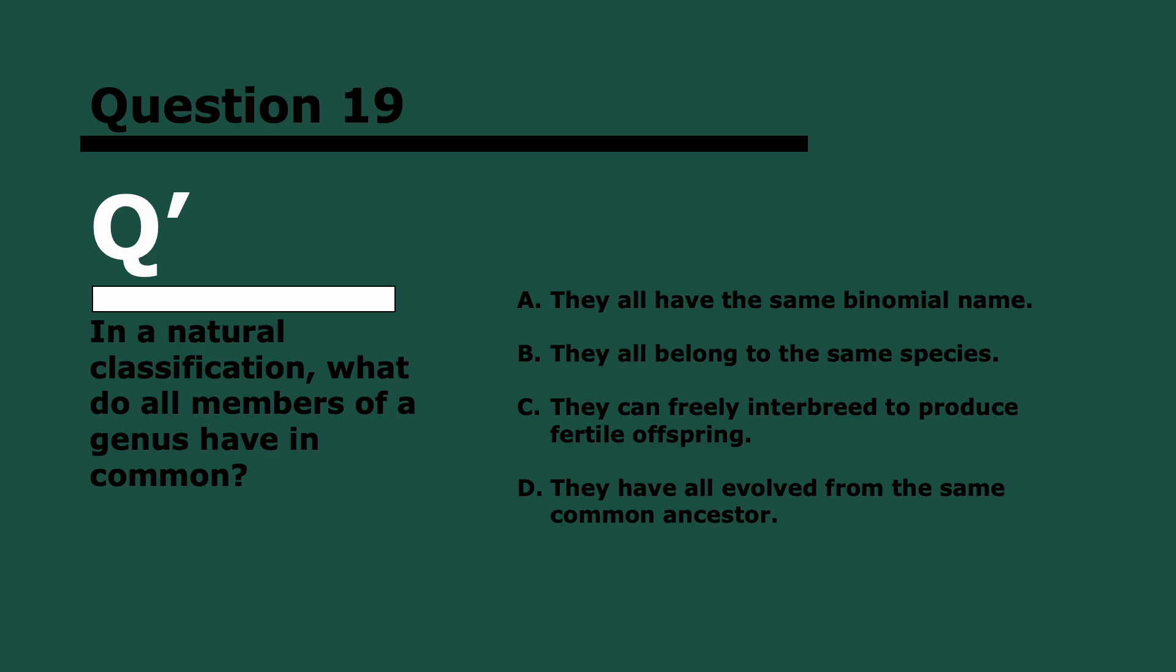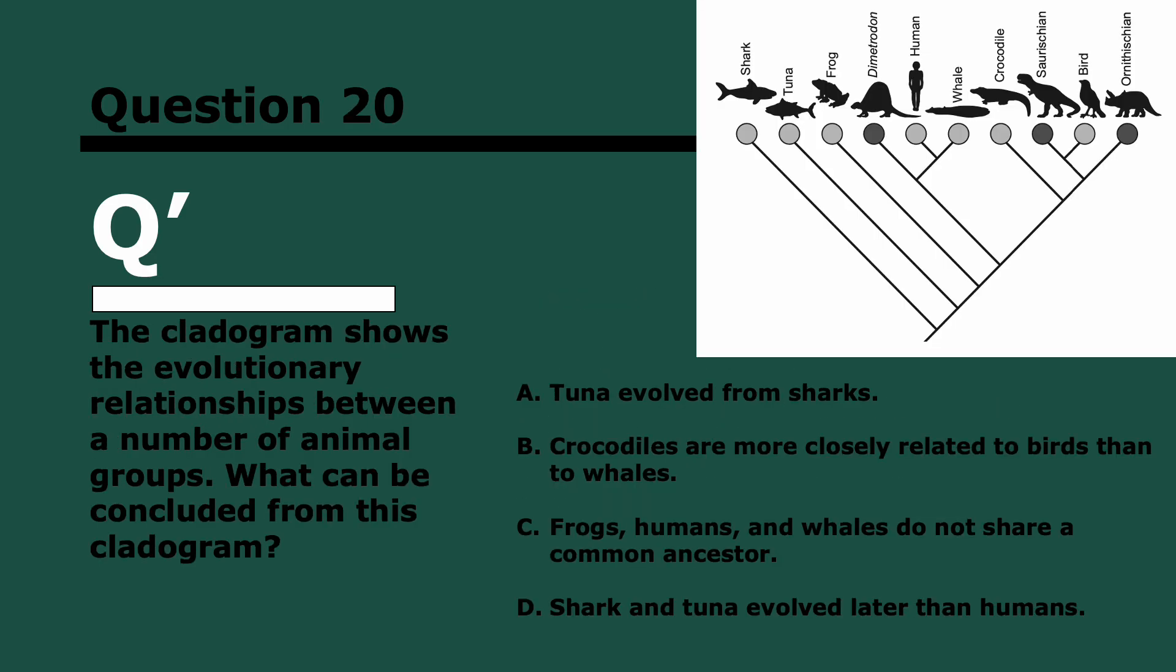Question 19. In a natural classification, what do all members of a genus have in common? Remember taxonomy, quite a few questions on this in this paper. Three, two, and one. They all evolved from the same common ancestor because they're in the same evolutionary group. They don't have the same binomial name because the binomial name includes the species which differs. They don't belong to the same species. And C is true for species but not for genuses.